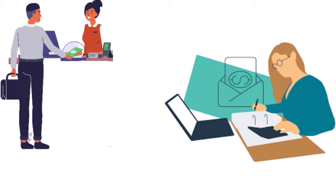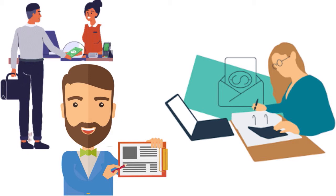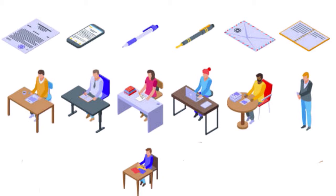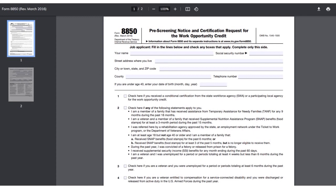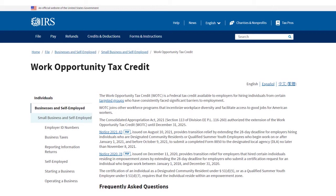How much you withhold is based on what the employee puts on Form W-4. All employees are required to complete Form W-4 — the Employee's Withholding Certificate — to provide the employer with information needed to compute withholding. For new employees, employers may also require Form I-9 to verify they are legally eligible to work in the United States. It's also advisable for employers to have employees complete Form 8850, which is submitted to the state workforce agency to determine whether the new employee falls within a targeted group entitling the employer to the Work Opportunity Tax Credit.